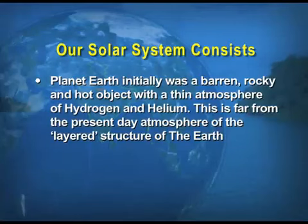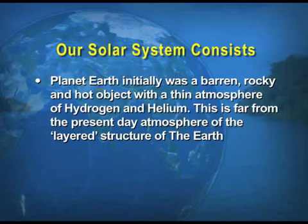Modern man, if you see in the geological time scale, is 0 to 10,000 years before present — a very recent happening with respect to geological time. When we talk about our solar system, those stars which lie inside the ring up to the belt of asteroids are known as inner planets, and those beyond that are known as terrestrial planets. The remaining four beyond the asteroids are also known as Jovian planets. The planet Earth initially was a rocky and hot object with a thin atmosphere of hydrogen and helium.